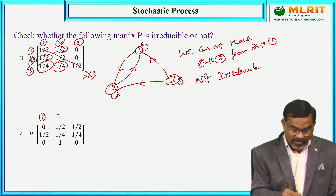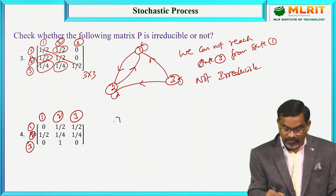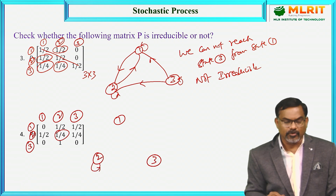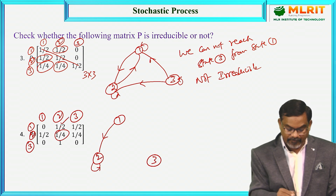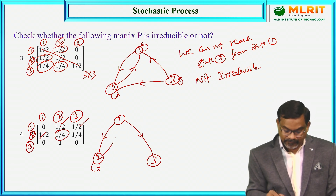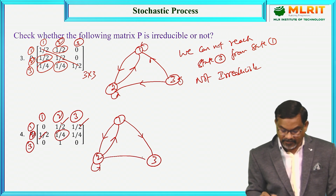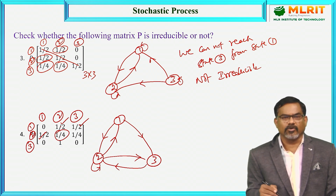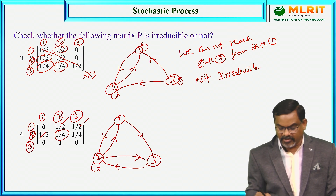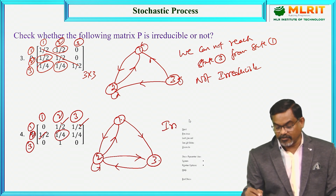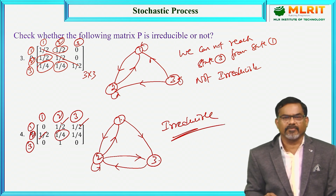Consider the fourth example, again with 3 states. Only 1/4 is present in the principal diagonal, so 2 to 2 is there. There is a path from 1 to 2 with probability 1/2, a path from 2 to 1, and a path from 2 to 3. And there is a path from 3 to 2. Now let us check: if I start from 1, I can reach 2, and then I can reach 3 also. If I start from 2, I can reach 1, and then from 1 to 3 is possible. From 3, I can reach 1 via 2. So the process is irreducible since there is at least one path from any node to any other node.